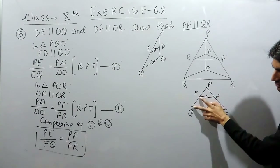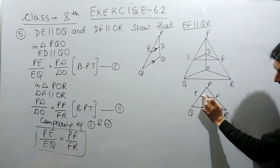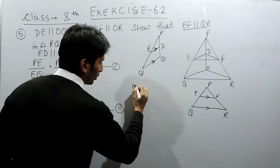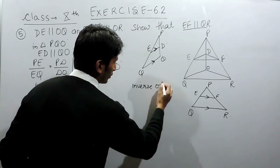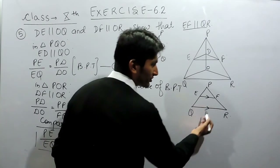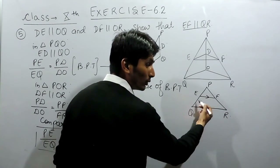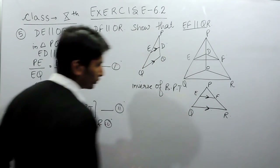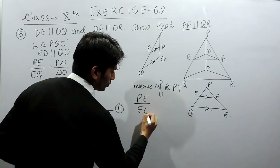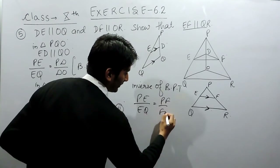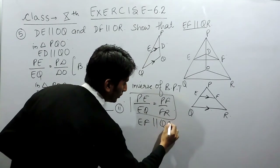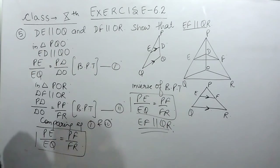Now we can say that since the ratio between these two pairs of sides are equal, the line EF must be parallel to the third line QR. This is because of the Converse of the Basic Proportionality Theorem, which states that if a line in a triangle cuts two sides in equal ratio, then that line must be parallel to the third side. So we have proved that EF is parallel to QR.